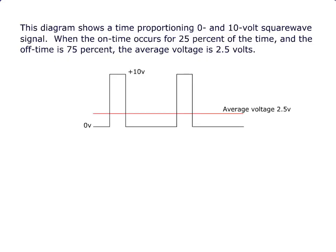This diagram shows a time proportioning 0 and 10 volt square wave signal. When the on time occurs for 25% of the time, the off time is 75%. The average voltage is 2.5 volts.